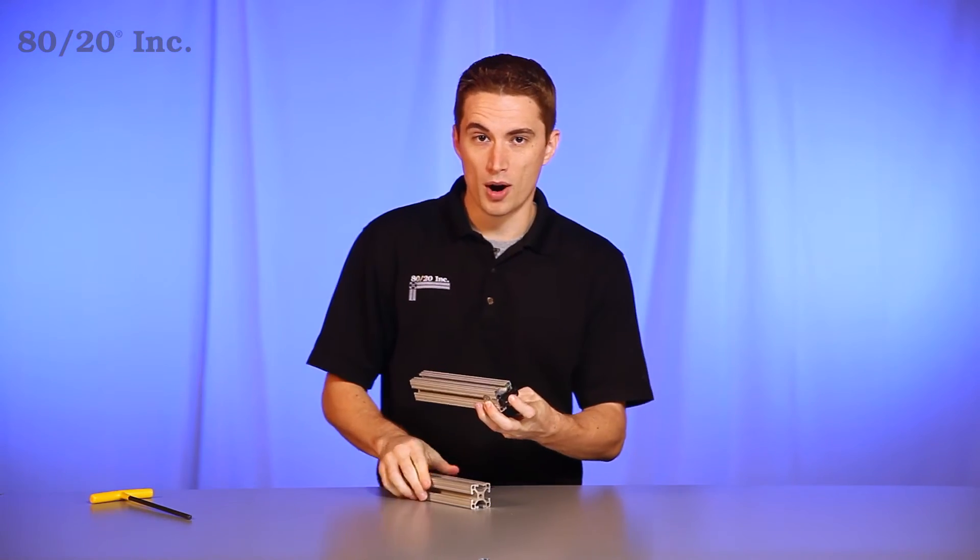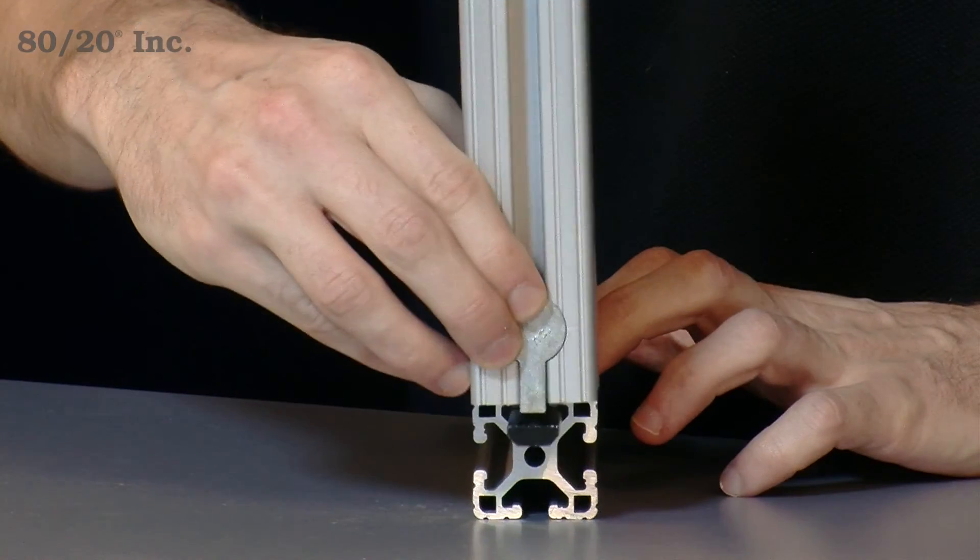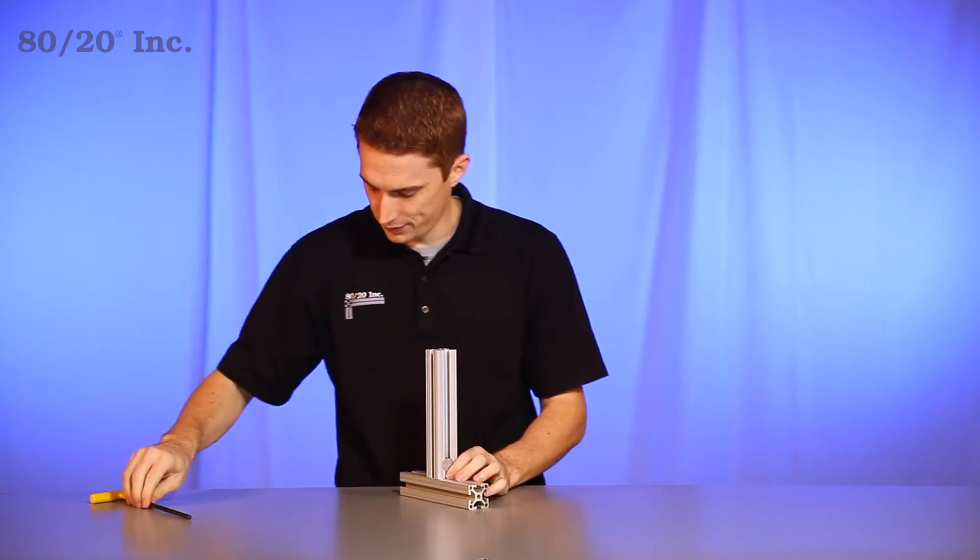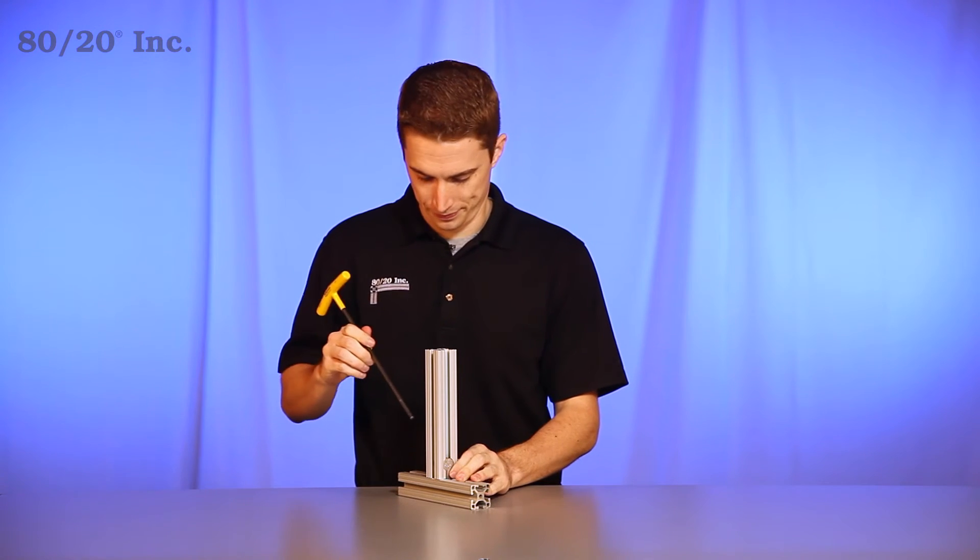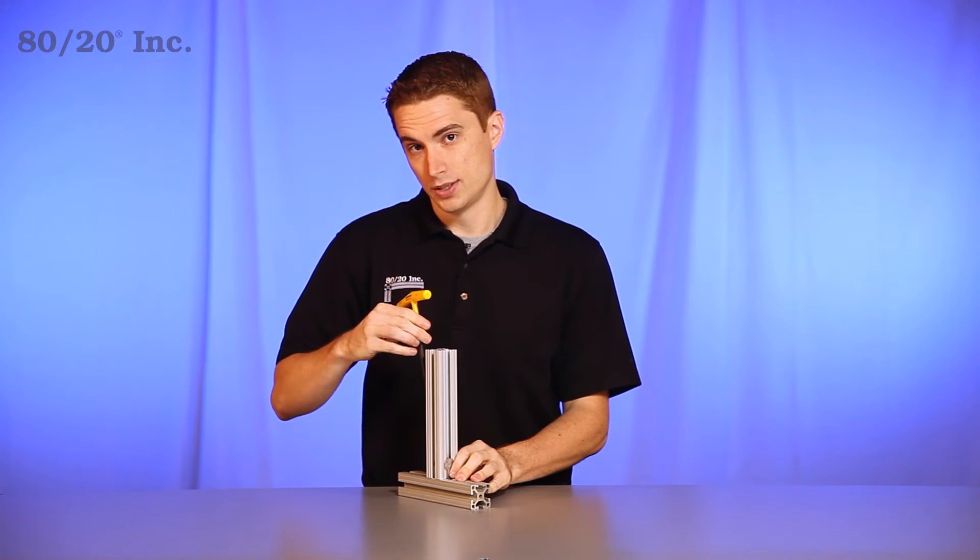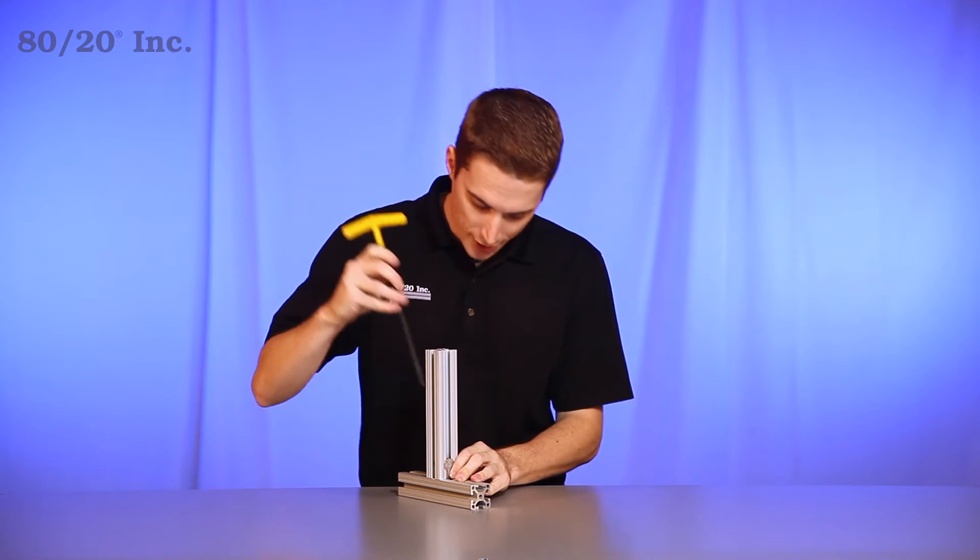At that point, we're ready for our other bar. We're going to slide the double anchor fastener into the bar and find our desired location. At that point, take your t-wrench and tighten down firmly.